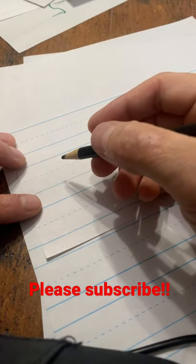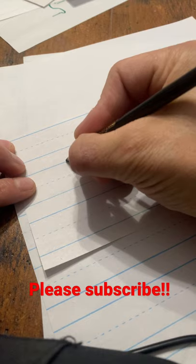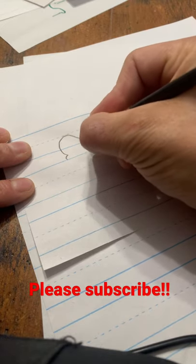This is kind of the trick to any graffiti bubble letter. So let's say you're drawing an S. Here's how I do it.